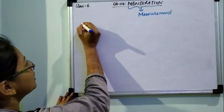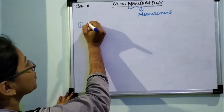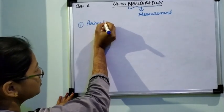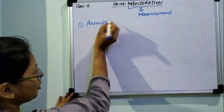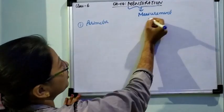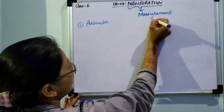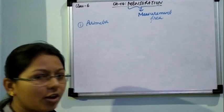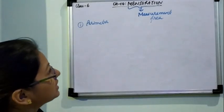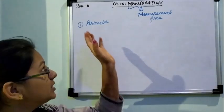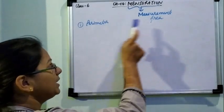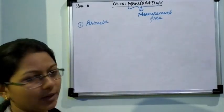Now in this topic we will cover perimeter. The basic concepts covered in this chapter are perimeter and area. First of all, let us understand the basic difference between perimeter and area.